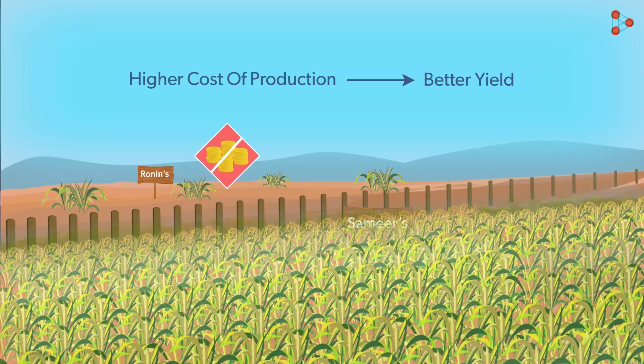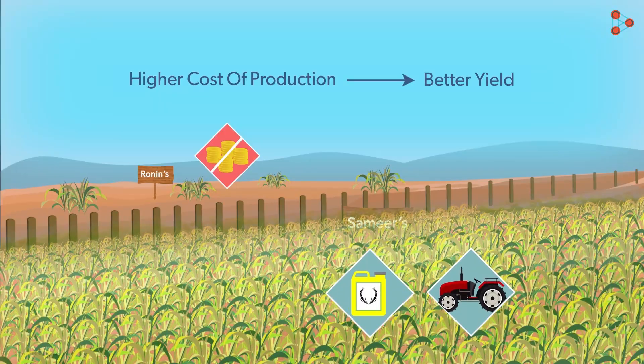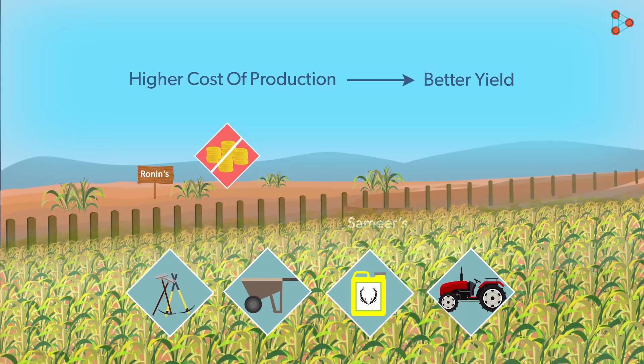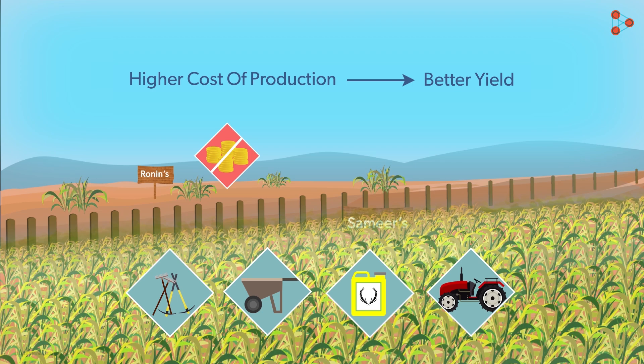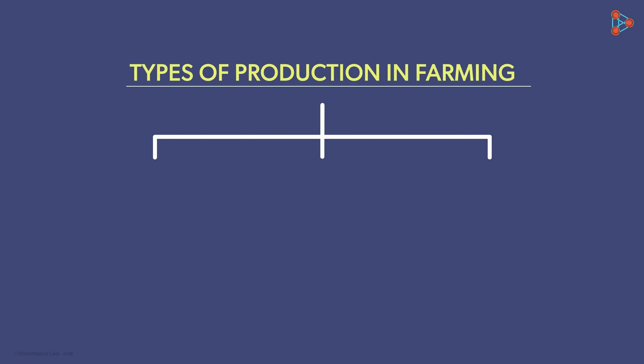When a farmer has an ability to purchase high-end technological equipments, his cropping system varies and he can earn more from his land. Based on this monetary aspect of farming, there are three different types of production in farming.